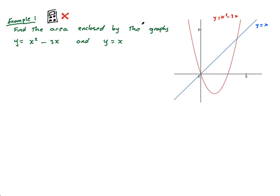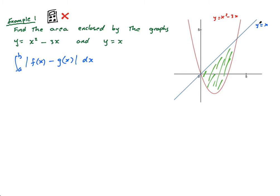The first question says: find the area enclosed by the graphs y equals x squared minus 3x and y equals x. I want to shade in the region I'm looking for — this region here, enclosed by the two graphs. Now, in order to use my formula, the formula will be the integral from a to b of f of x minus g of x dx. f of x is y equals x because it's above the green area, and g of x is x squared minus 3x because it's below. What I don't have yet are the intersection points.